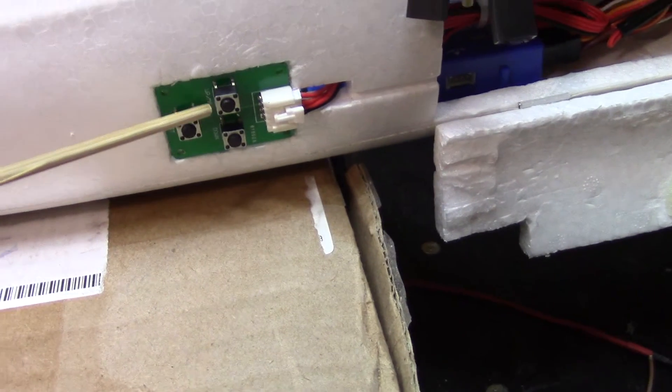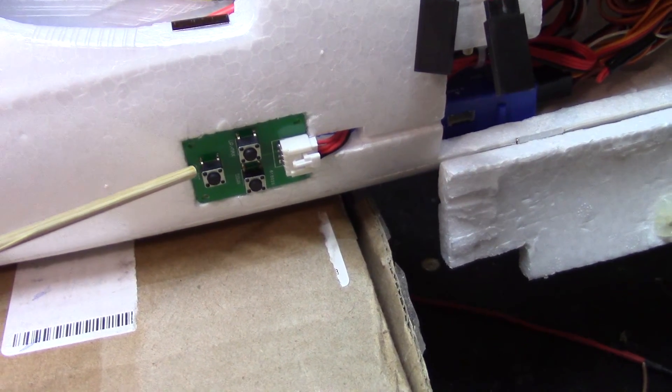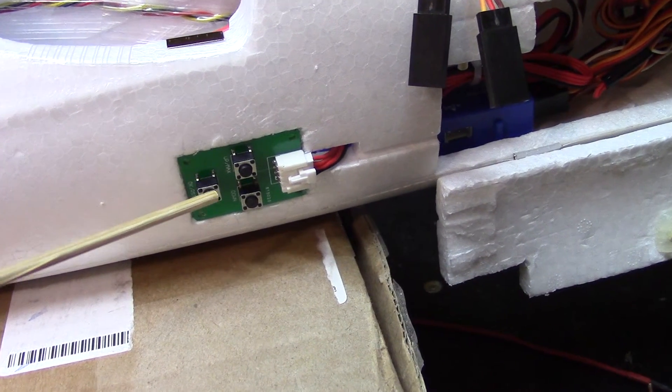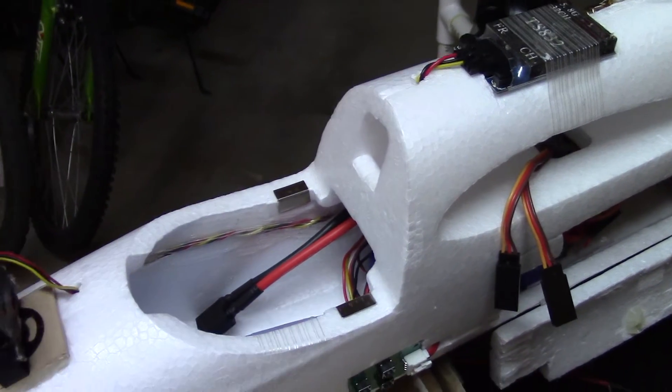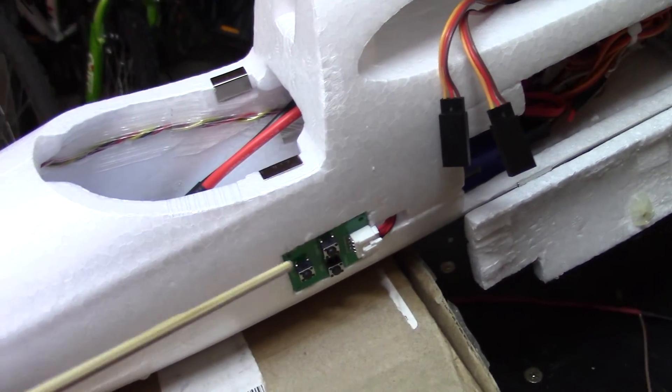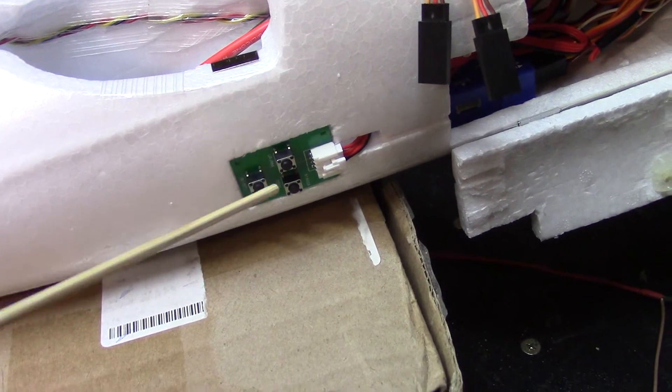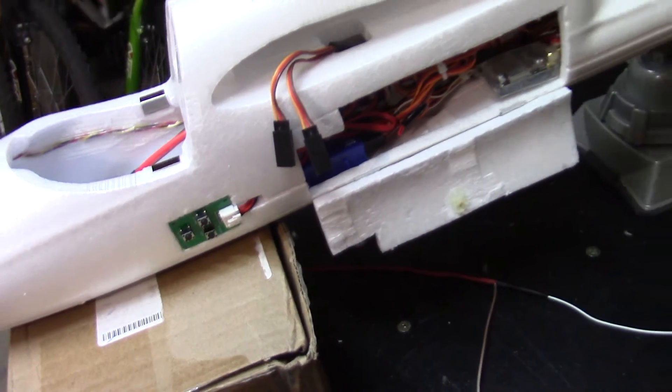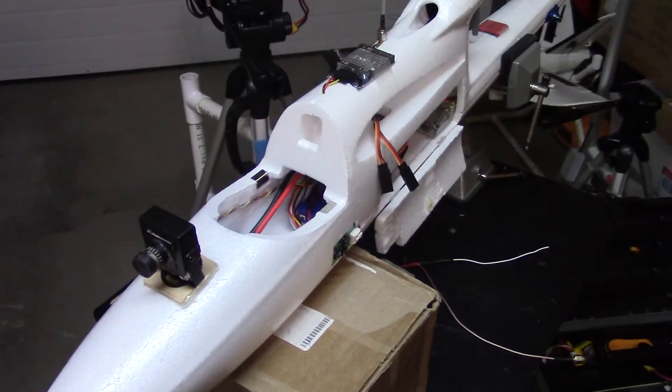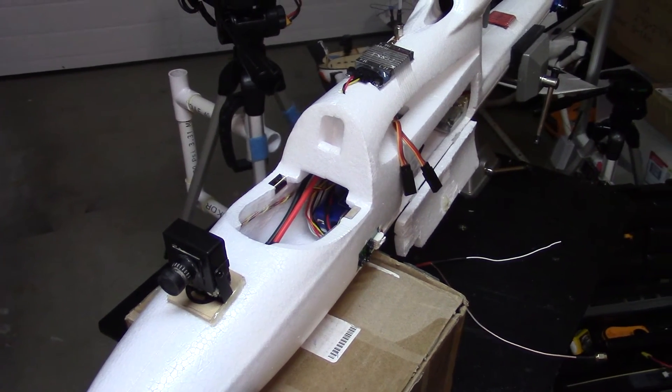And this one here again, this is the control buttons for the Tornado OSD. Before I just had it dangling here, and I'd pull it out whenever I needed it because you need to press the button there to set your home location. So I just hot-glued it here to be easily accessible. So yeah, this is my sixth Bixler 2 build. Thank you.